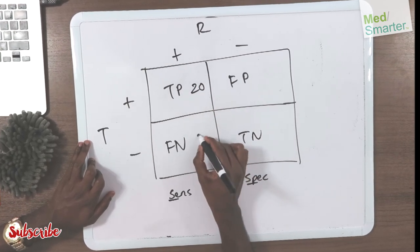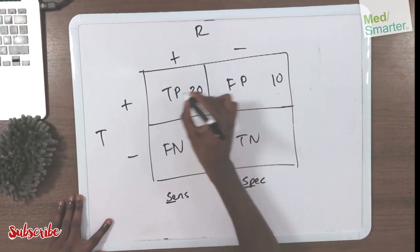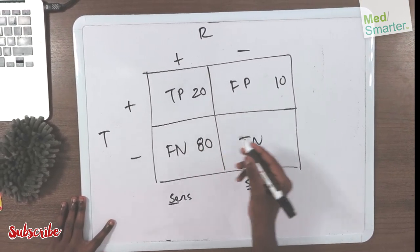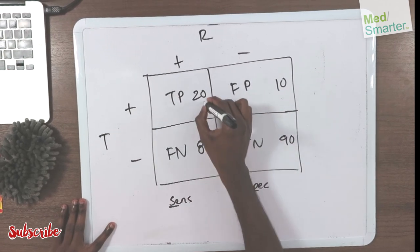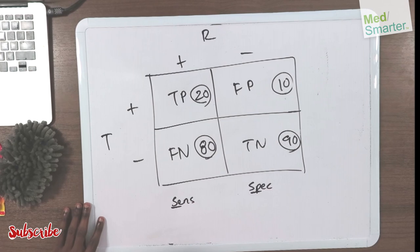Let's give some values here. When the question comes, they're not going to label this for you, but they will give you the numbers: 20, 80, 10, and 90. Now they're asking you for sensitivity.